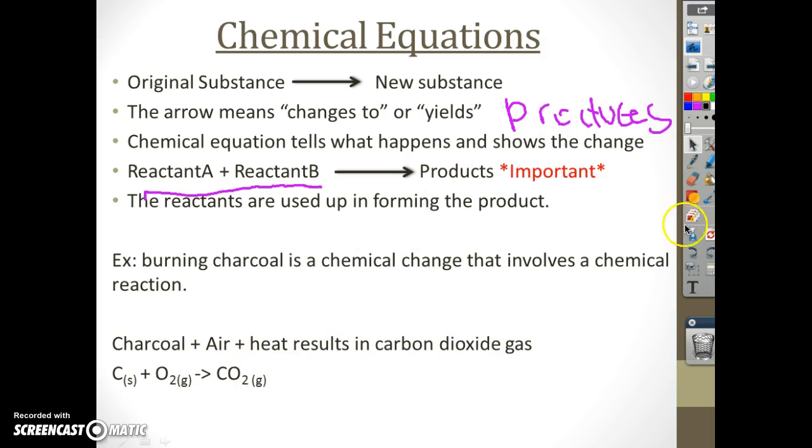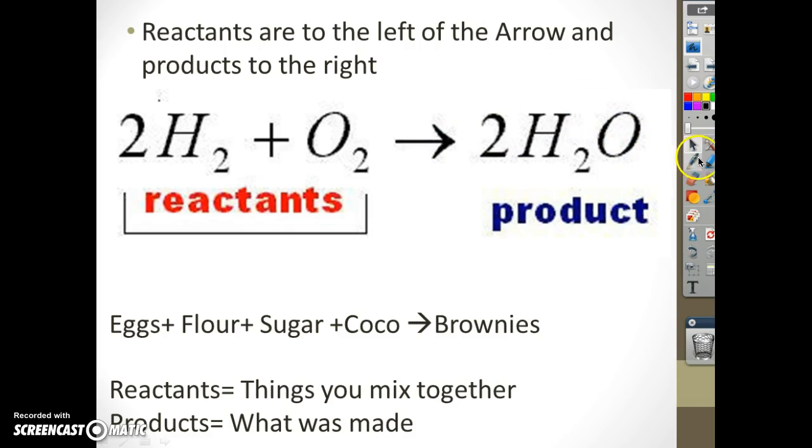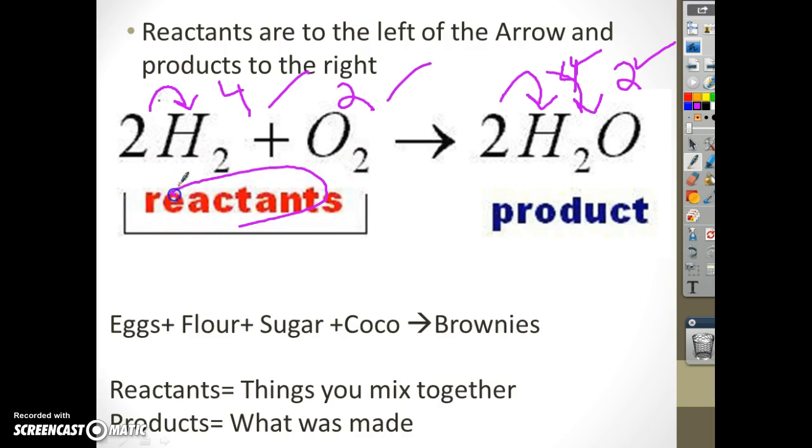An example here: reactants on the left. How many H's do I have? Four. How many oxygens? Well that two doesn't apply to it, so I only have two. This guy applies to everything. How many H's? Four. How many O's? Two. Let's see, are they equal? Two and two, four and four. They are. This is what I would call a balanced equation. Here's a real life example: take some eggs, put them in a bowl with some flour, sugar, cocoa, throw them in the oven. What do I get out? Delicious brownies. Same ingredients, different product.